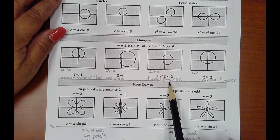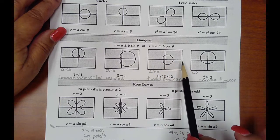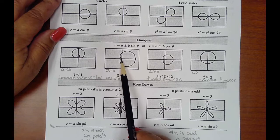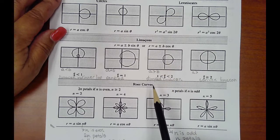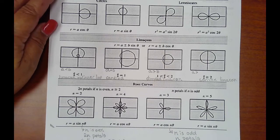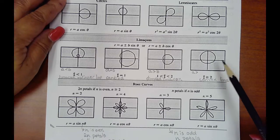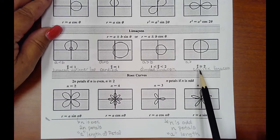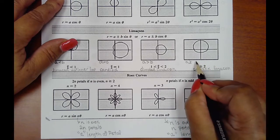Another type of limaçon is the dimpled limaçon. You'll have this kind of equation with symmetry about the polar axis, so this would have the trig function cosine in it. The dimpled limaçon occurs when this vertex, instead of coming into the origin, kind of hangs back — that's what we refer to as the dimple. That happens when the a value that comes before the plus or minus is greater than the b value. Then we have what almost looks like a circle but is part of the limaçon family — the convex limaçon — and that occurs whenever your a value is greater than or equal to 2 times the b value.